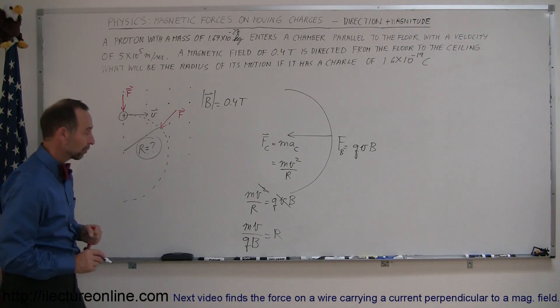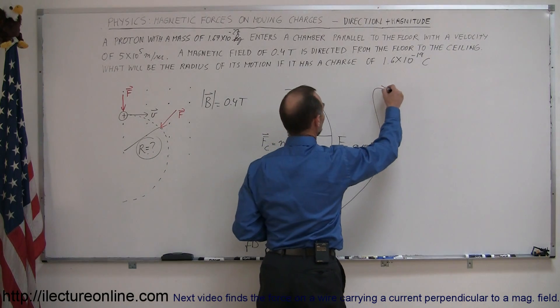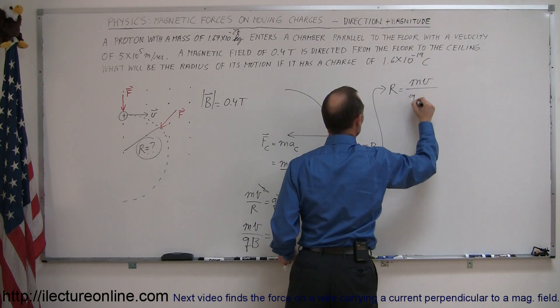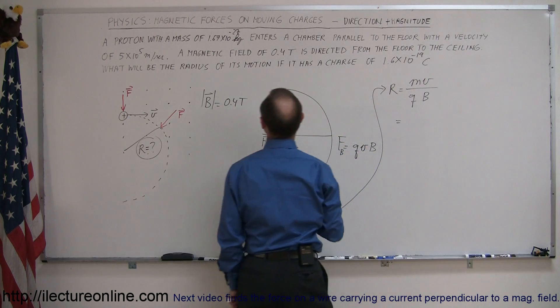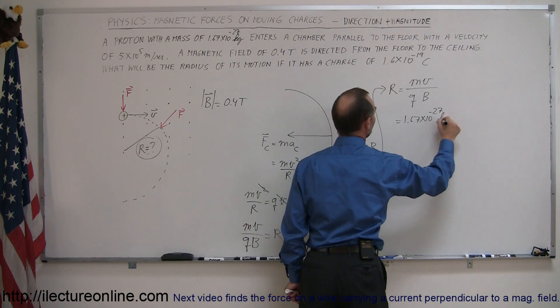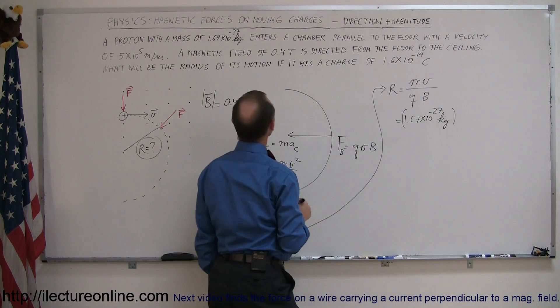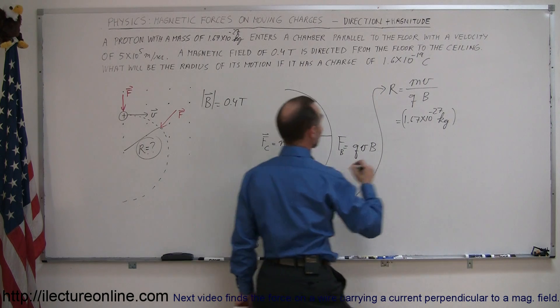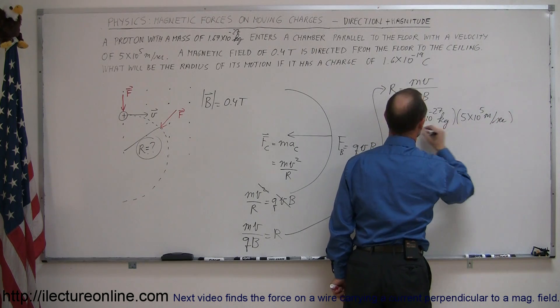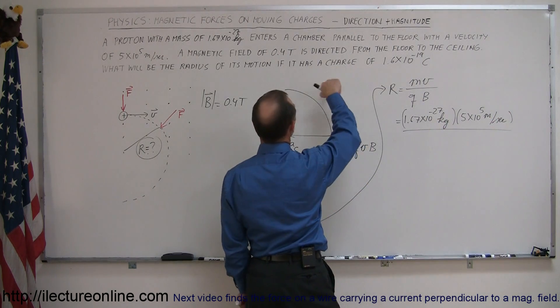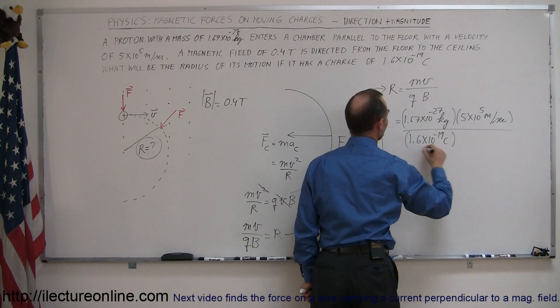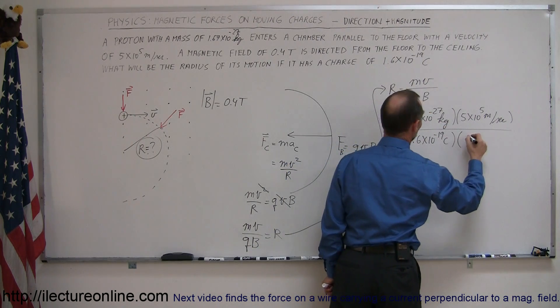Then all we have to do is plug in the numbers for those values, and we get the radius. So radius is equal to the mass times the velocity over the charge times the strength of the magnetic field. So the mass given to us at 1.67 times 10 to the minus 27 kilograms. The velocity, 5 times 10 to the fifth meters per second, divided by the charge. The charge of a single proton is 1.6 times 10 to the minus 19 coulombs. And then finally, the magnetic field is 0.4 teslas.